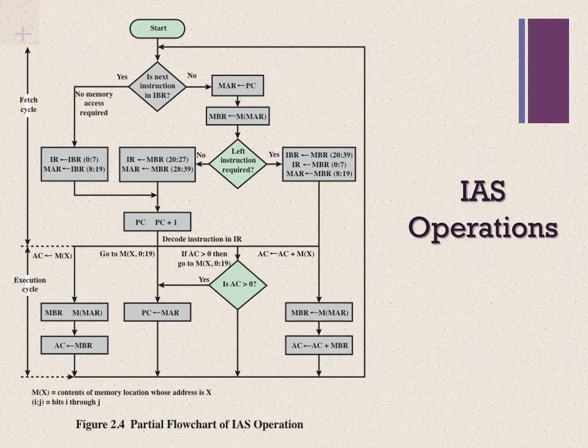In figure 2.4 we can see several examples of instruction execution by the control unit. Please note that each operation requires several steps, some quite elaborate. For example, the multiplication operation requires 39 sub-operations for each bit position except that of the sign bit.